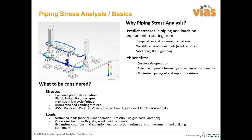The piping stress analysis ensures safe operation and extends the longevity of the equipment, and also minimizes the piping layout and support revisions. When doing the piping stress analysis, things to consider include excessive plastic deformation, buckling due to plastic instability or collapse, high strain low cycle fatigue loading, and membrane and bending stresses. There are also different codes like ASME and API which give you the allowable limits for particular kinds of piping systems and pressure vessel boilers.